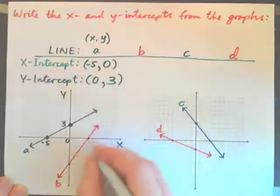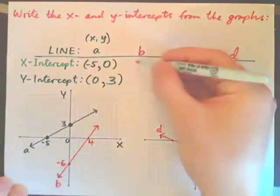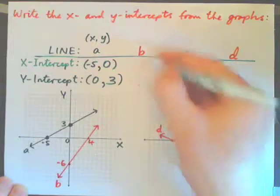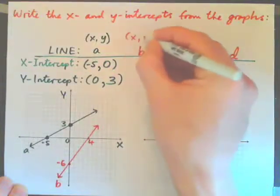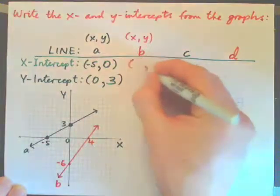Now for line B, it goes through the x-axis at 4. And it goes through the y-axis at negative 6. So write down the x-intercept and the y-intercept in ordered pair form, x, y. So see if you can do line B.